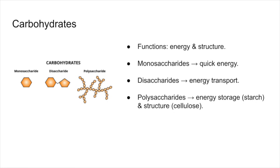Carbohydrates are primarily used for energy and structure. Their monomers are monosaccharides, like glucose, which store quick energy. Disaccharides are often used for energy transport, while polysaccharides can either store energy, like starch, or provide structure, like cellulose in plant cell walls.